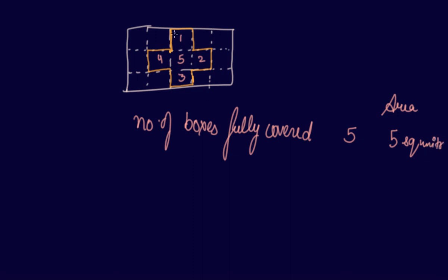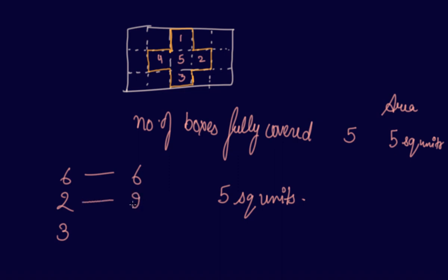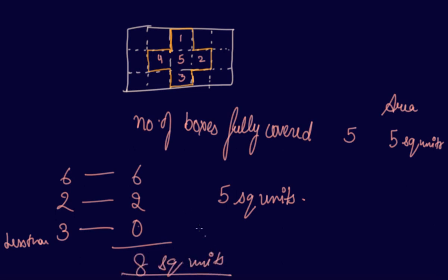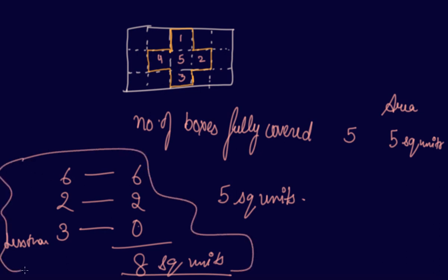Since no unit length is mentioned, you write it as 5 square units. When finding area this way, count the complete boxes. If complete boxes are 6, more than half-filled boxes are 2, and less than half-filled boxes are 3 — we count the complete boxes as 6, the more-than-half boxes as 2 each, and less-than-half-filled boxes we take as 0. So the area would be 8 square units. For rectangles or other standard figures, use the formula; for other figures on a grid, count the boxes.